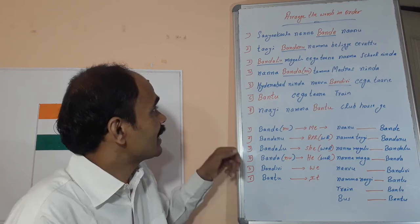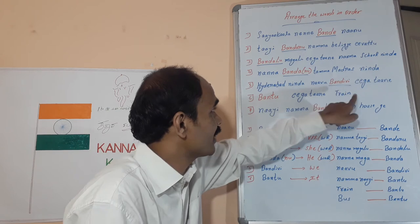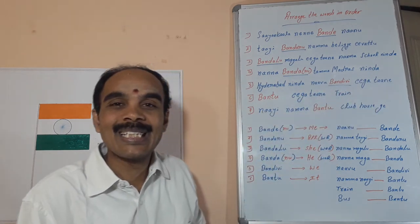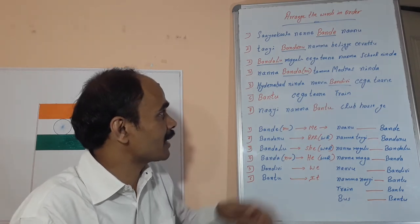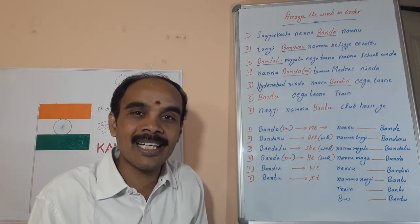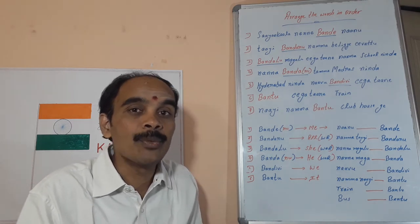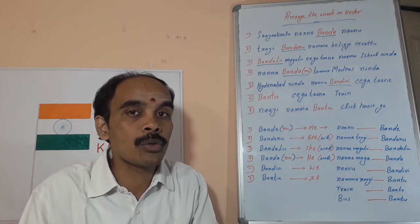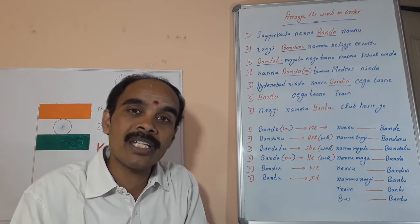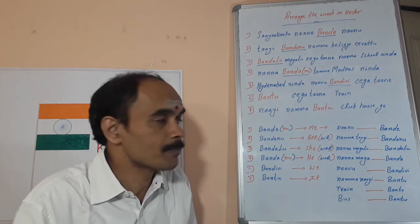The next one is: 'naavu bandhvi eegathane hyderabad ninda.' The answer is: 'naavu hyderabad ninda eegathane bandhvi.' After the 'bandhu' sound, if we add 'vi,' that is 'we came' — bandhvi. To say 'we came,' we use 'vi' at the ending along with the verb. It is spelled B-A-N-D-H-V-I. We can also say 'bandhvi' with the 'i' sound.